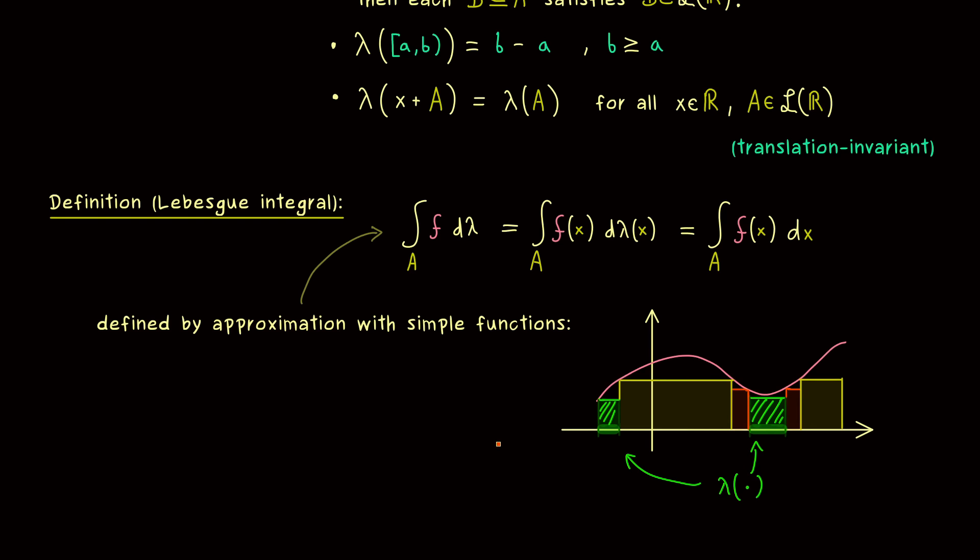And then in the last step we just form a supremum over all these approximations from below. So most importantly, in the case you only know the Riemann integral, you should note that we approximate exactly the same area here. So in fact the Lebesgue integral gives us exactly the same number as the Riemann integral. It just turns out that the Lebesgue integral also works in cases where the Riemann integral fails.